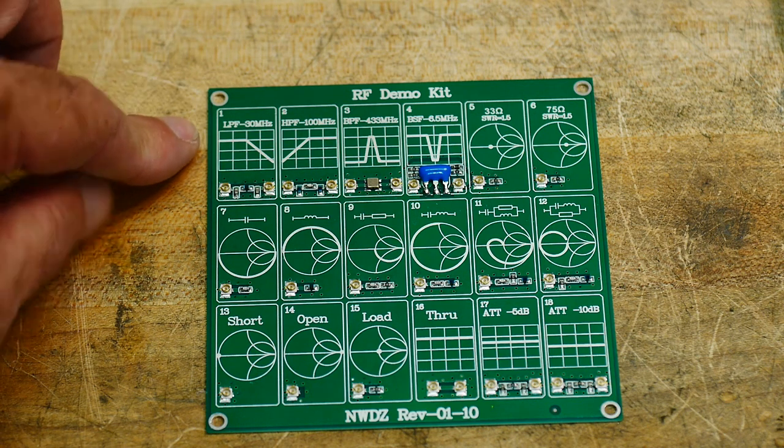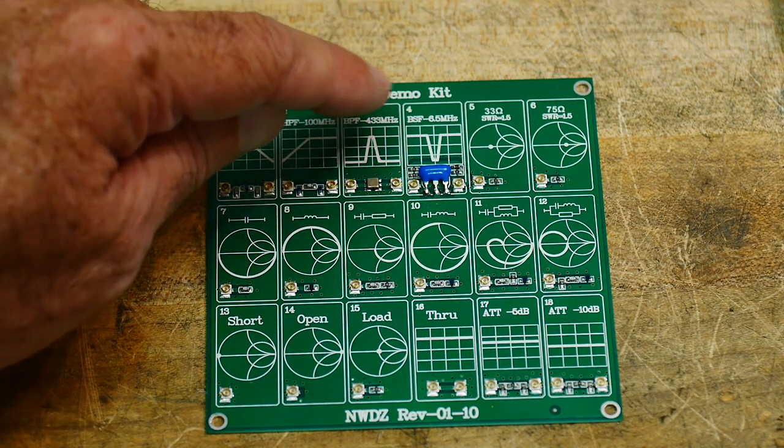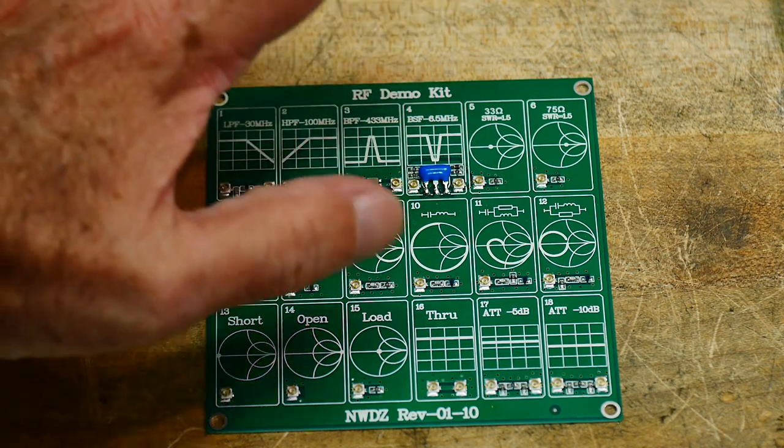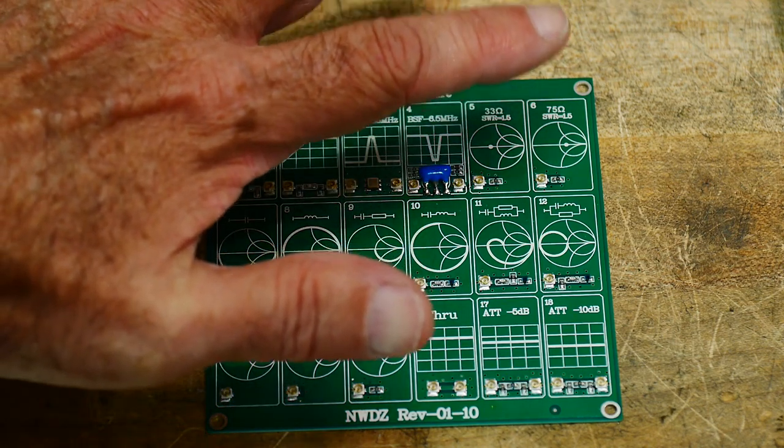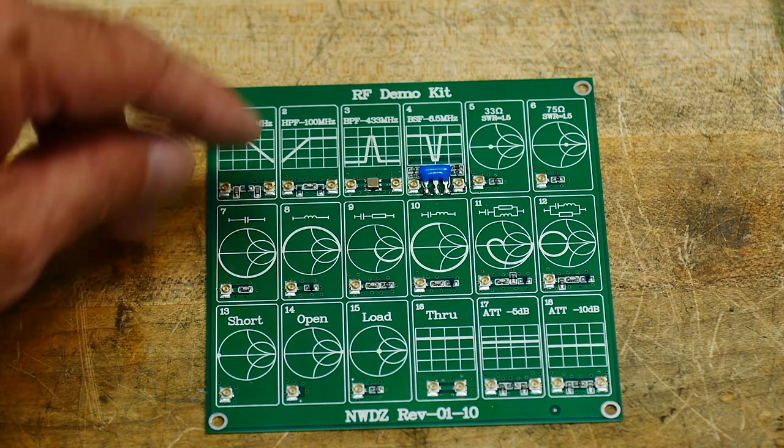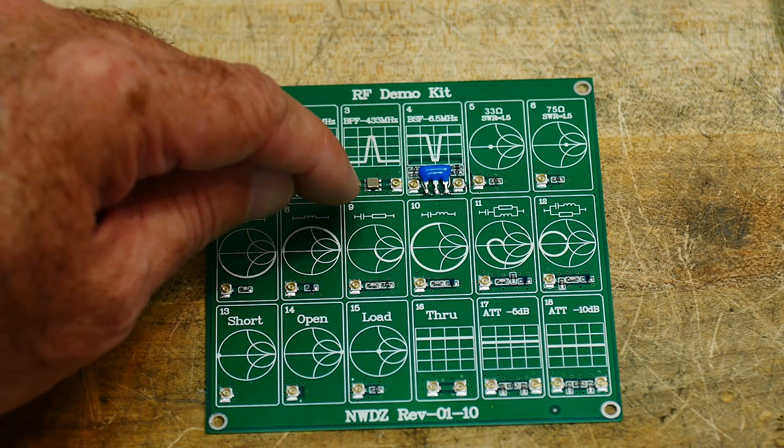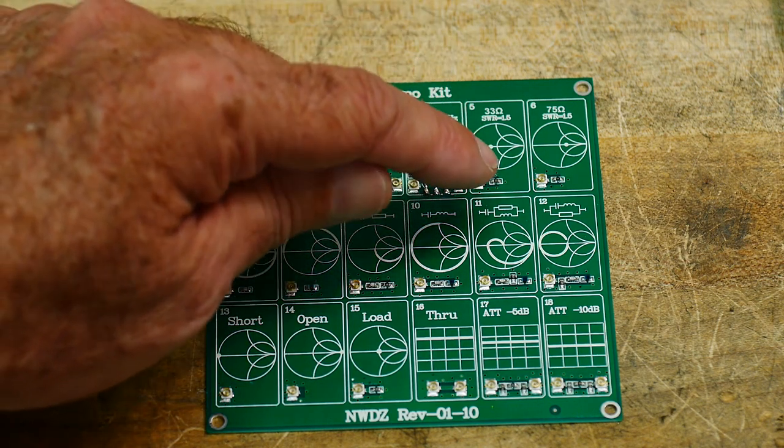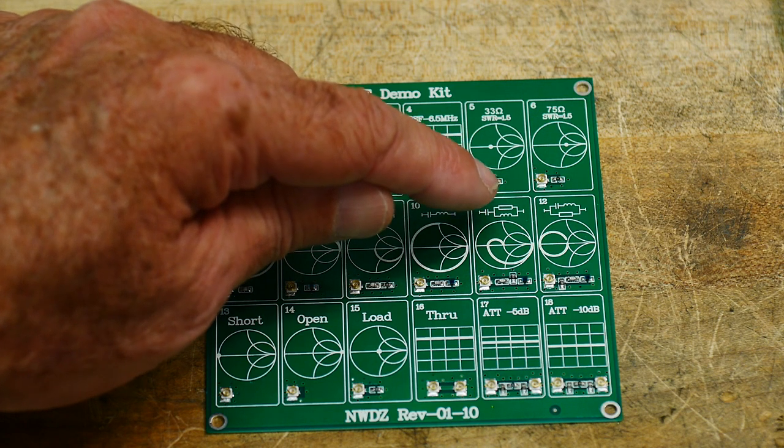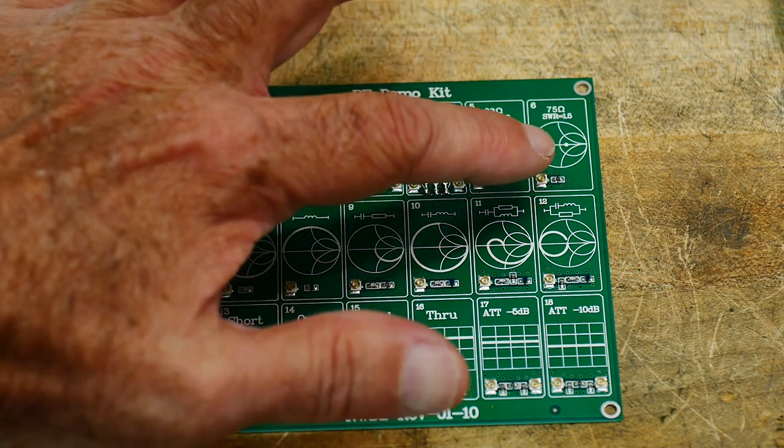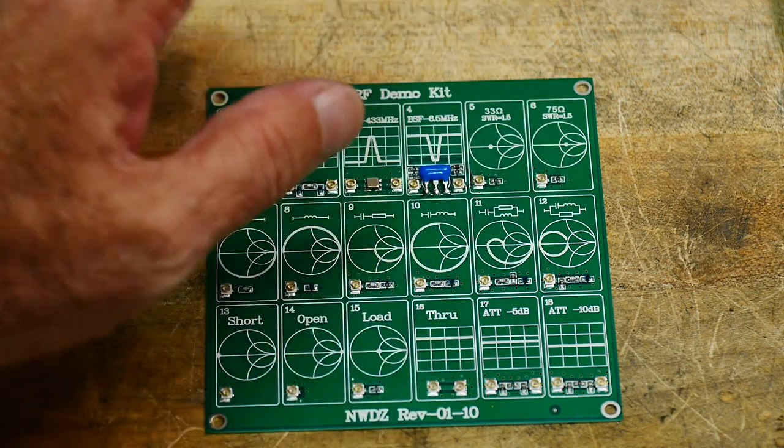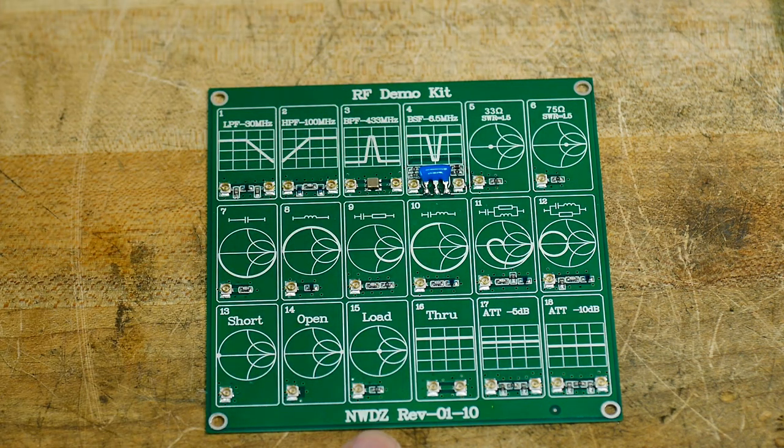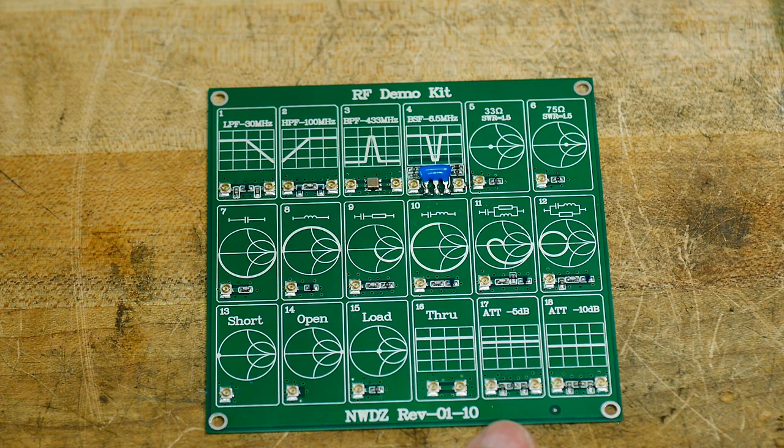There's a low pass filter, a high pass filter, a band pass filter, a band notch filter, a 33 ohm load, a 75 ohm load, capacitor, inductor, capacitor with resistance, capacitor with inductance, a capacitor with resistance and inductance, capacitor, inductor across the resistor. It's got an open short load, a through, and a 5 dB attenuator, and a 10 dB attenuator.